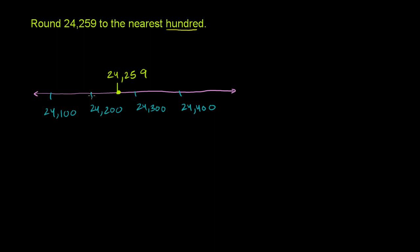round to whichever increment of hundred that it is closest to. And if you look at it right like this, if you just eyeball it, you'll actually see that it is closer to 24,300 than it is to 24,200. So when you round it, you round to 24,300.